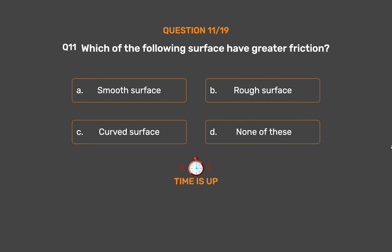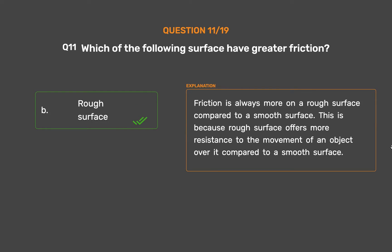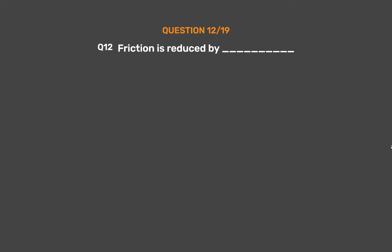The correct answer is Option B: Rough surface. Friction is always more on a rough surface compared to a smooth surface, because a rough surface offers more resistance to the movement of an object over it compared to a smooth surface.